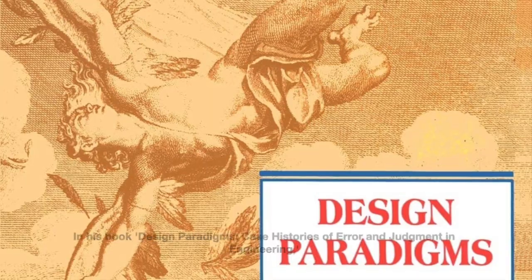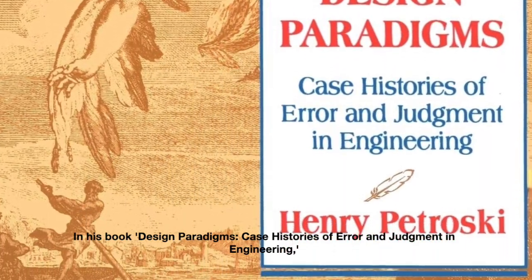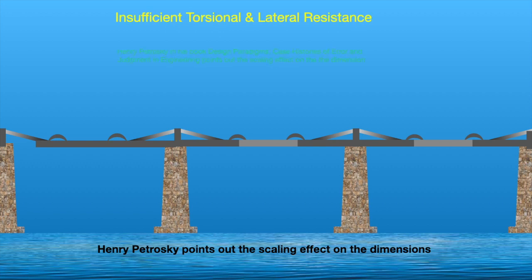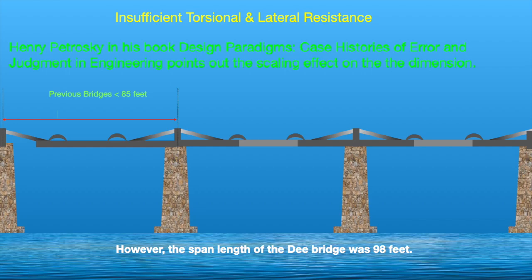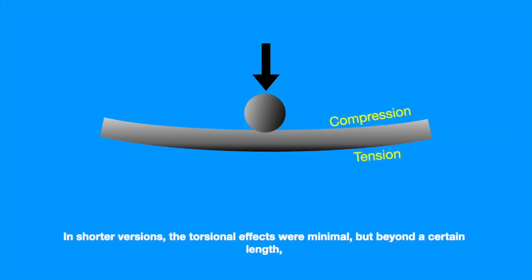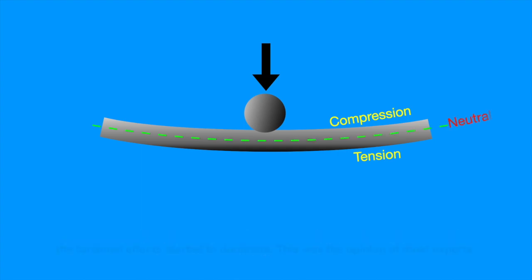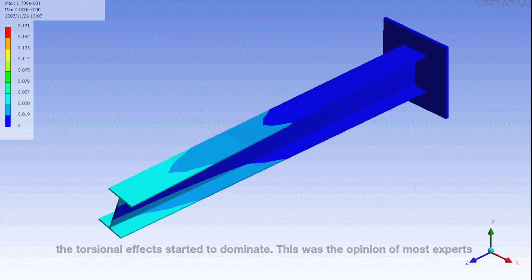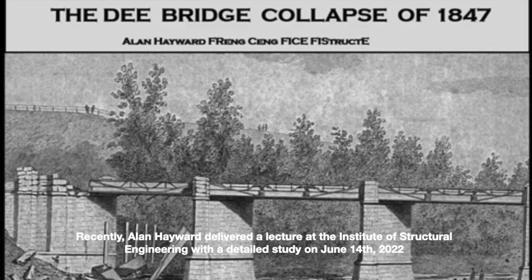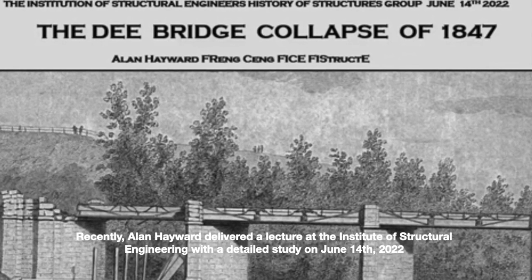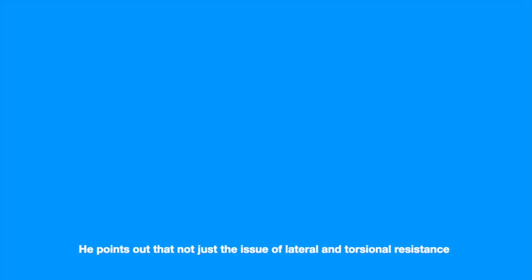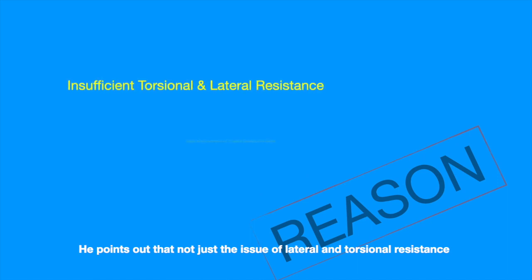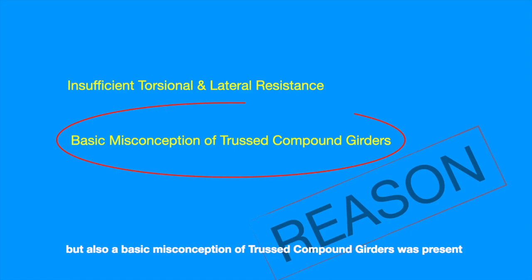Then what went wrong in this case? In his book Design Paradigms: Case Histories of Error and Judgment in Engineering, Henry Petrosky points out the scaling effect on the dimensions. In all of Stephenson's previous bridges, the span length was not longer than 85 feet. However, the span length of the Dee Bridge was 98 feet. In shorter versions, the torsional effects were minimal, but beyond a certain length, the torsional effects started to dominate. This was the opinion of most experts. Recently, Alan Hayward delivered a detailed lecture at the Institute of Structural Engineering on June 14, 2022, pointing out not just the issue of lateral and torsional resistance, but also a basic misconception of trussed compound girder design.